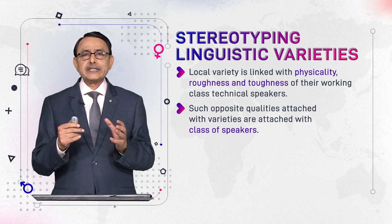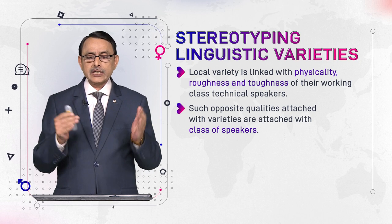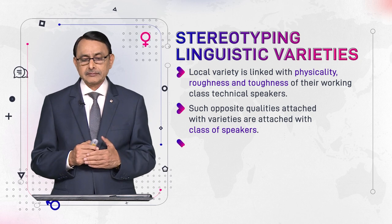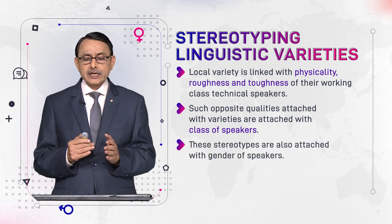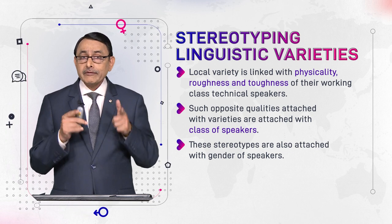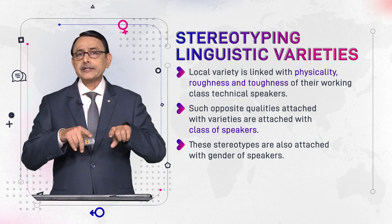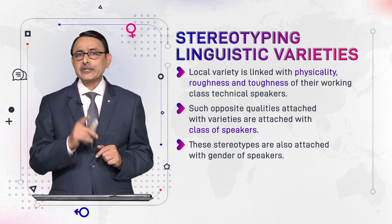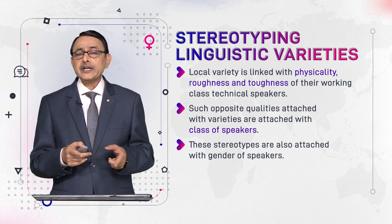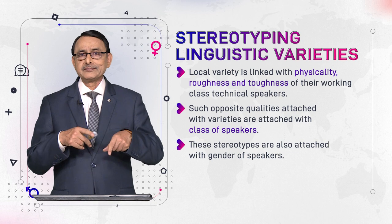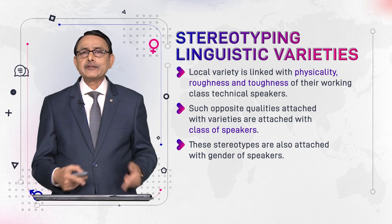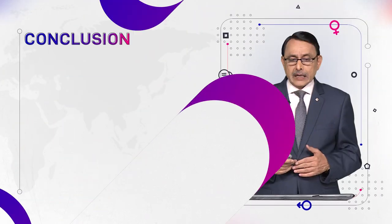Such opposite qualities, which are attached with varieties, are also attached with the class of speakers. These stereotypes are also attached with the gender of speakers. So far we have talked about stereotyping of variety with reference to class, and similarly, with class comes the interaction of gender and variety. Gender and class together interact with language variety.